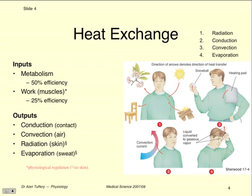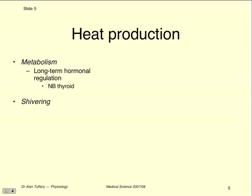Heat production is regulated. Metabolism in the body can be regulated in the short term but is mainly regulated long term, and thyroid hormones are the key hormones for that — they affect most cells in the body. An excess of thyroid hormone gives you a higher metabolism and you'll tend to lose body weight, whereas pathologically low thyroid hormone output means you'll tend to be cooler and accumulate body weight.